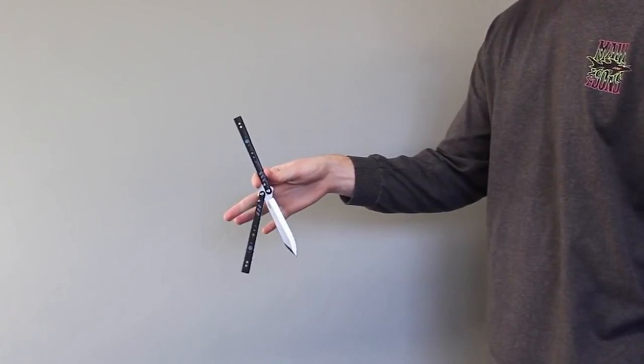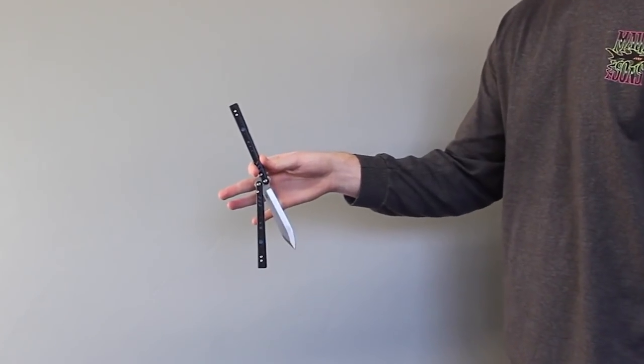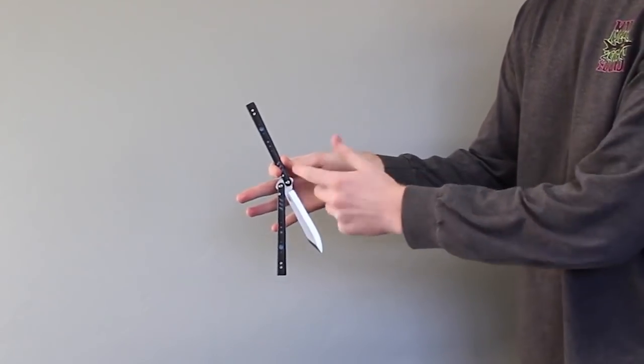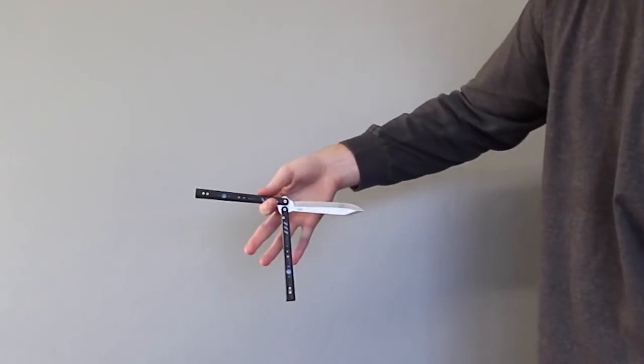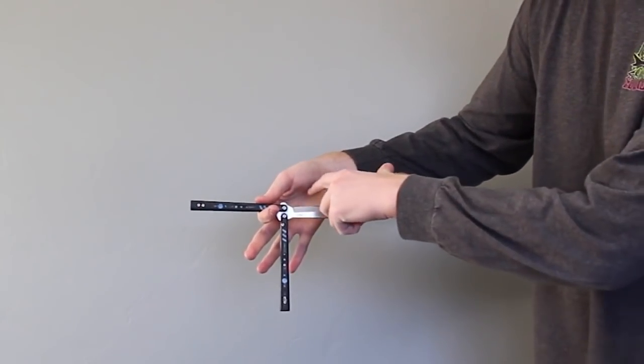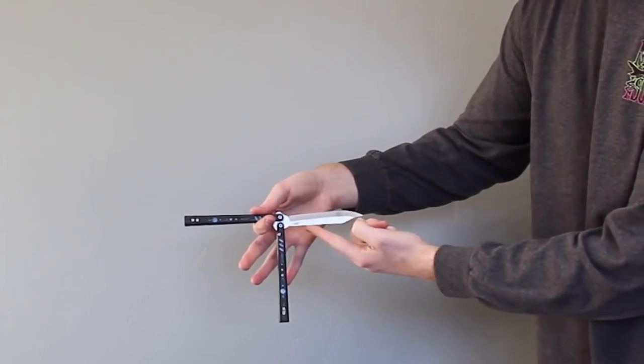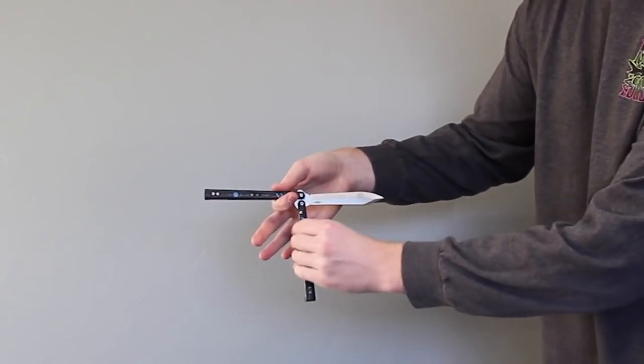And now you just have the knife in between your thumb and your pointer finger with the knife looking like this. This is the blade side right here, and this is the back of the blade. This is the safe handle hanging down.